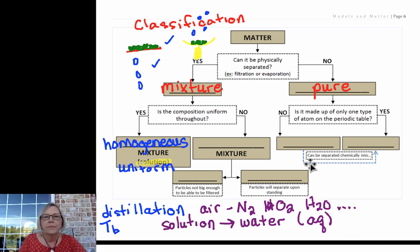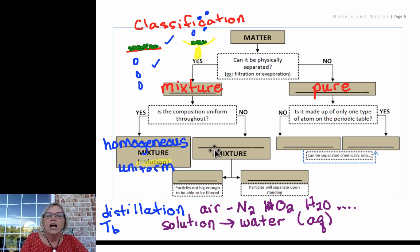Now if it was not uniform throughout—if I could see particles or if I could see layers separating out—we would call that heterogeneous, a heterogeneous mixture.